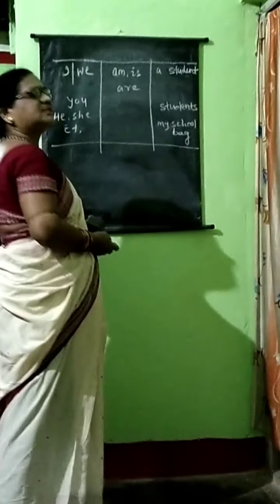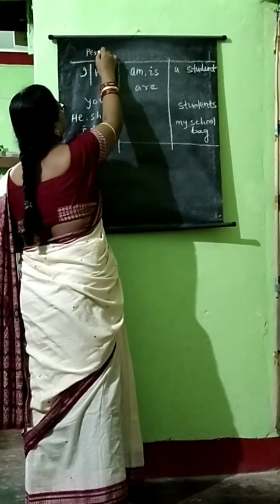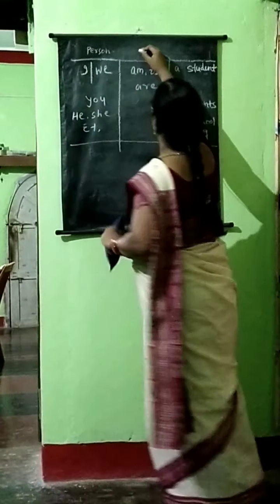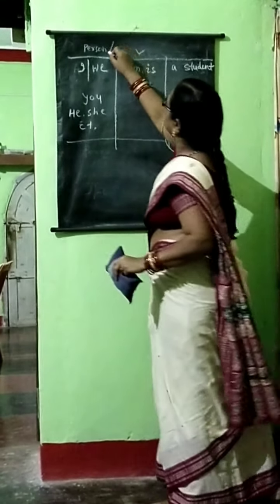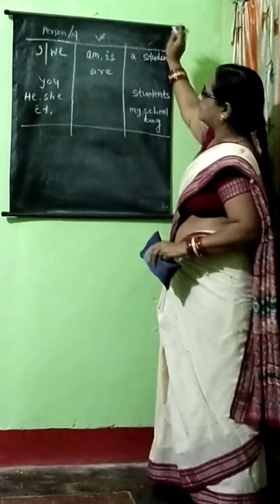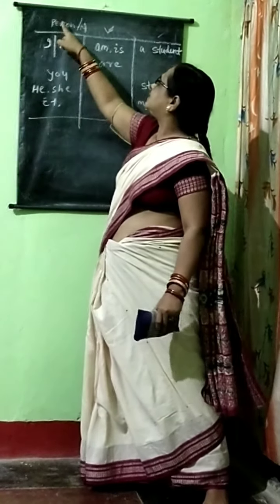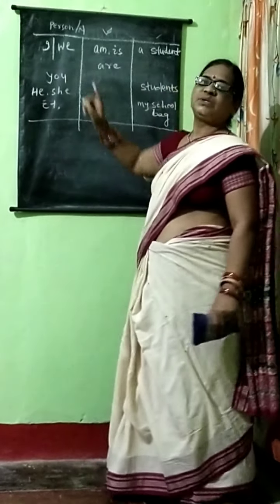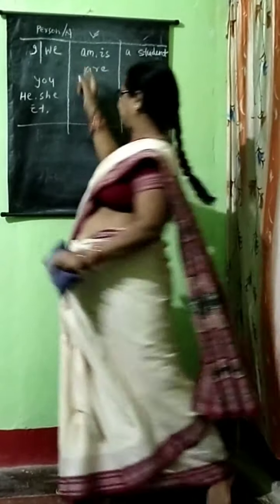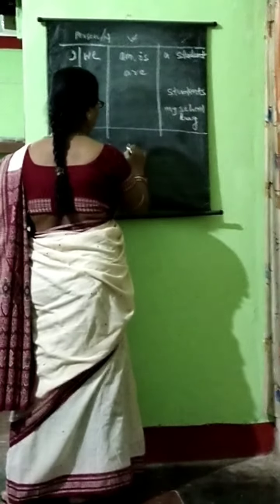Suppose this is the chart — this is the person and number, this is the verb, and this is the object. 'I' is the first person singular number, so 'I' agrees with 'am': I am a student.